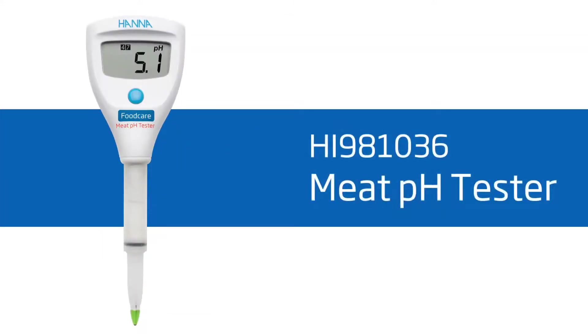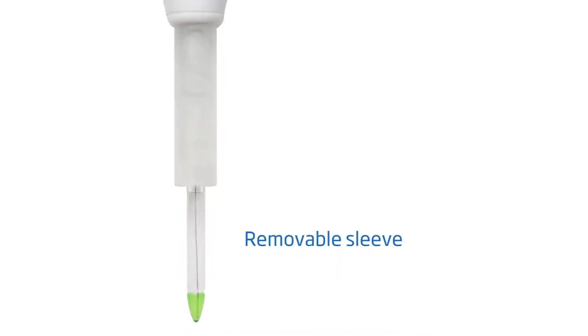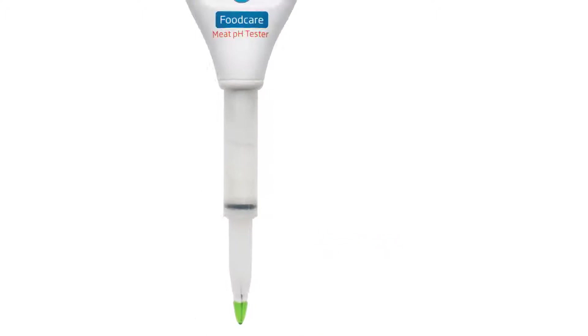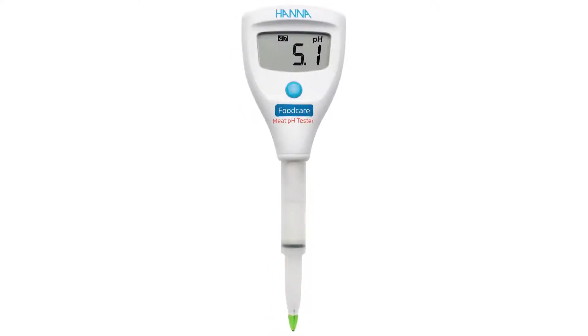Our HI981036 Meat pH Tester is made to withstand the tough environment of meat processing plants. The built-in probe features an open reference junction, conical glass tip, and a removable sleeve design that makes cleaning quick and simple to prevent bacteria and other harsh materials from contaminating your food.